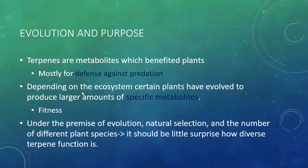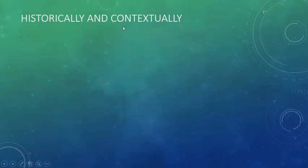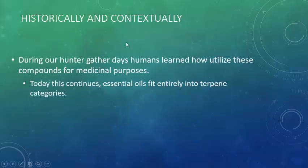So it stands to reason that there are going to be shapes among the terpene molecules that interact with animal systems and animal biological networks. Historically, during our hunter-gatherer days, humans learned how to utilize these compounds for medicinal purposes. Essentially, people went out and ate things — they took plants and took samples, combined them together, drank them as teas, boiled them, put them on wounds, and observed whether they had any medicinal effects.